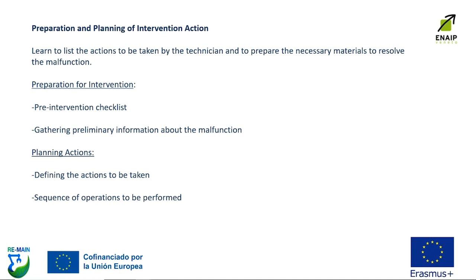As for the second learning outcome — preparation and planning of intervention — you have to learn to list the actions to be taken by the technician and prepare the necessary materials to resolve the malfunction. This includes preparation for intervention with a pre-intervention checklist and gathering preliminary information about the malfunction, then planning actions to define the sequence of operations to be performed.